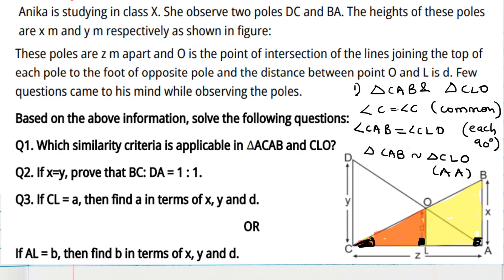So we have shown which similarity criteria applies. These are the steps we must show, and we can prove AA criteria.